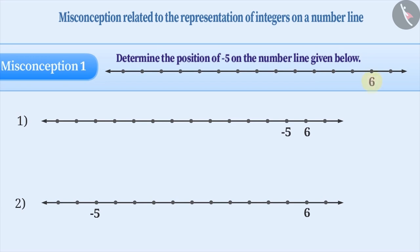Here, the position of number 6 is shown. Based on this, we can find the position of minus 5. Sometimes, minus 5 is mistaken as 5 and is placed before the positive integer 6. This is incorrect.